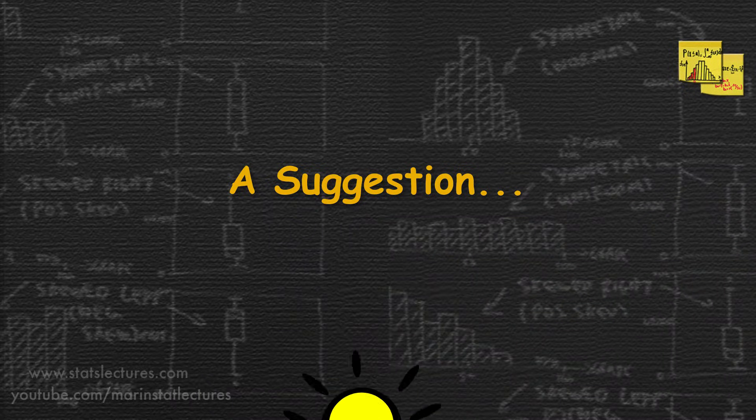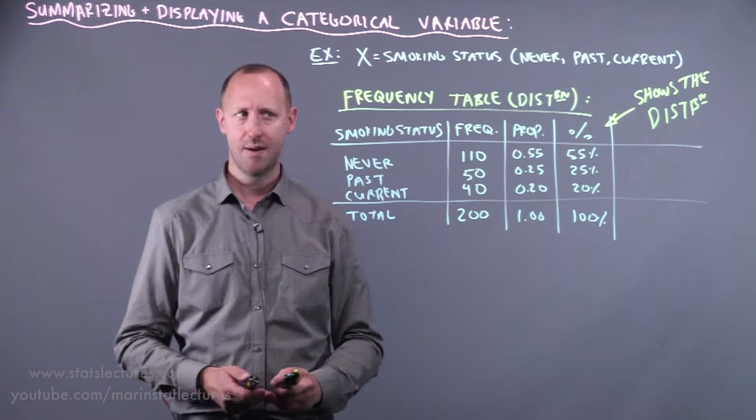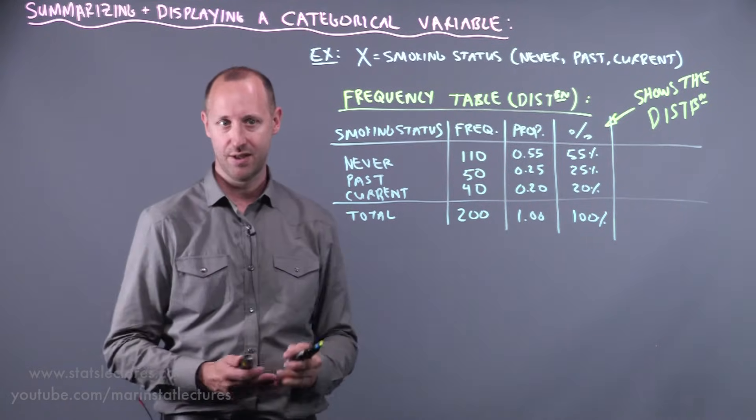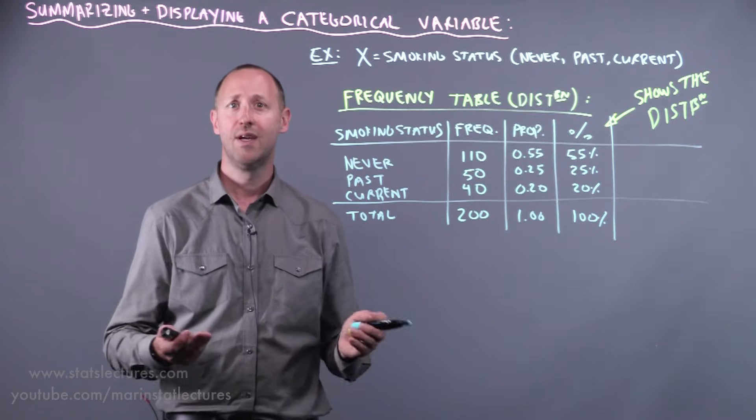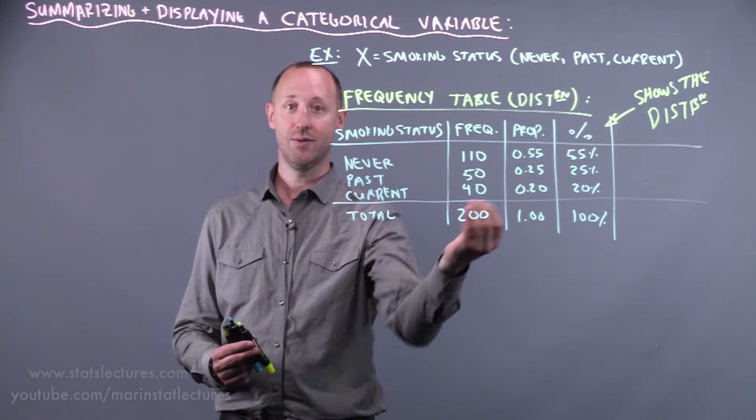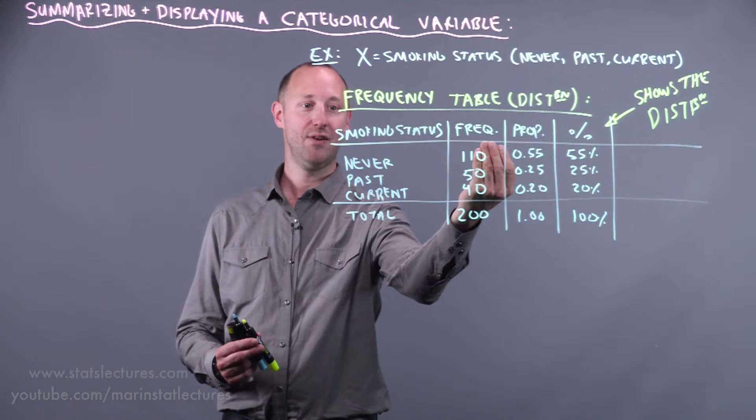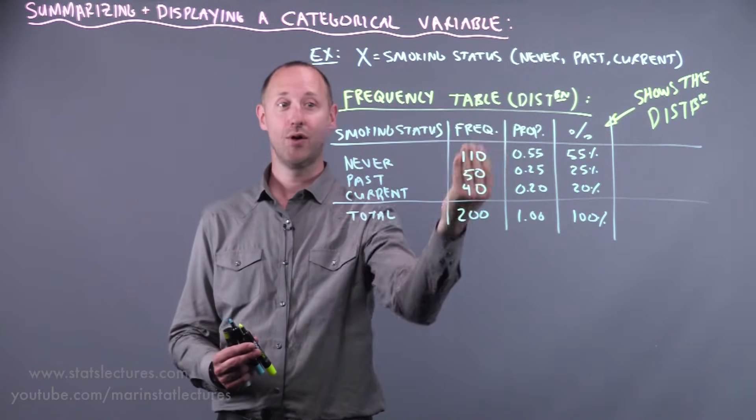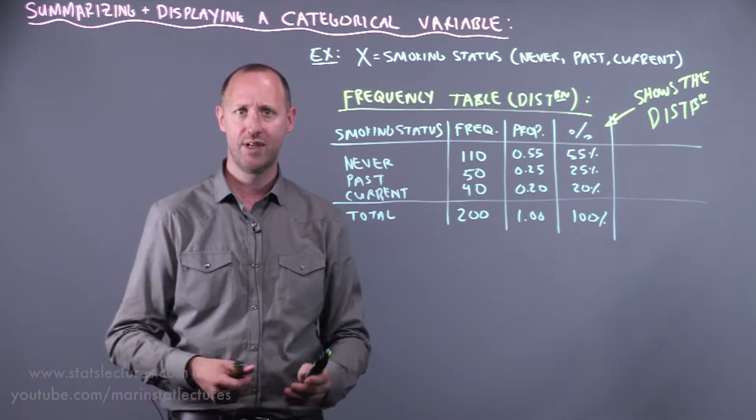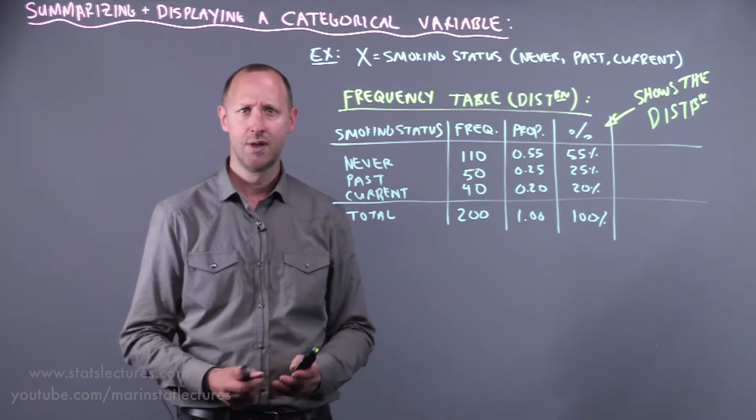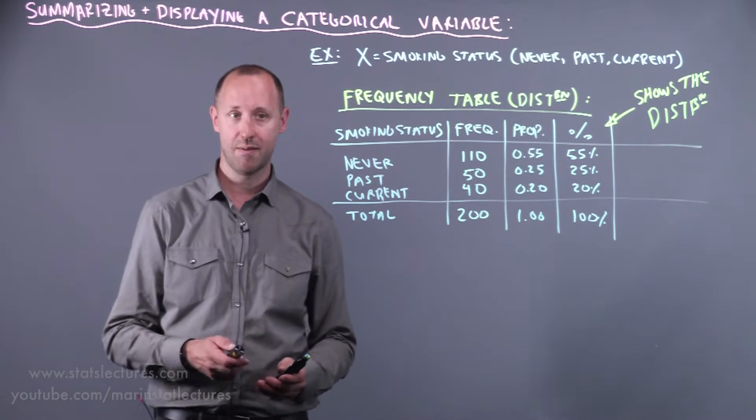A suggestion: when you have larger sample sizes, it's often more meaningful to report the proportion or the percentage falling in each category. If you had smaller sample sizes—suppose we only had 20 individuals and we had 11 falling as never smokers, 5 as past, and 4 as current—reporting those frequencies is going to be more meaningful or easier to interpret rather than reporting the percentages or proportions, which can be misleading with smaller sample sizes.